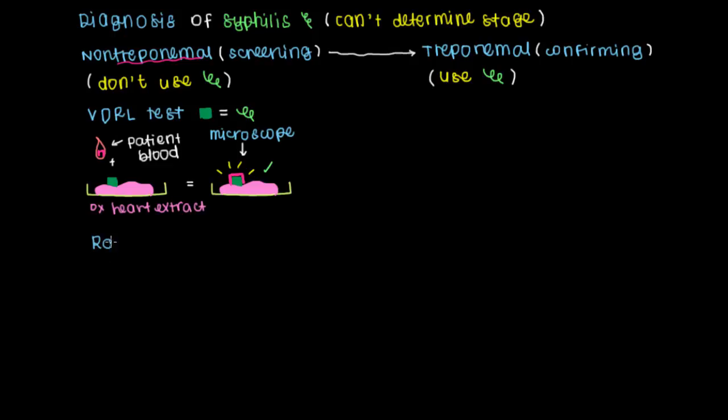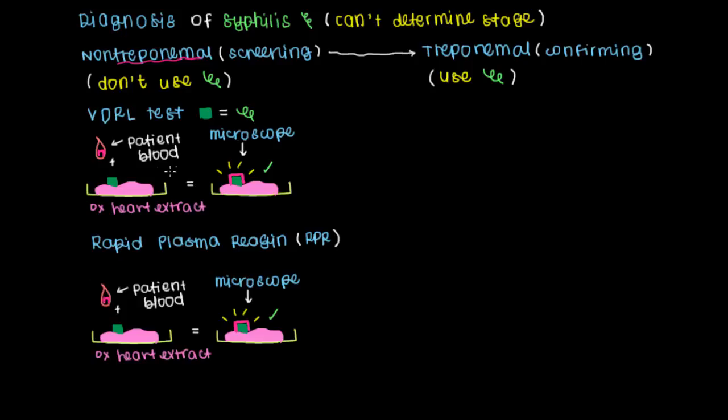The next non-treponemal test we can do is referred to as a rapid plasma reagent test, or RPR, which is exactly the same as the VDRL test. The only two differences is that we add these carbon particles to our well. These carbon particles are present here.